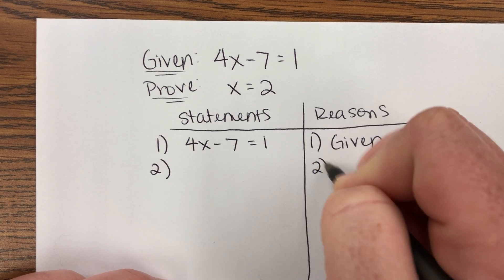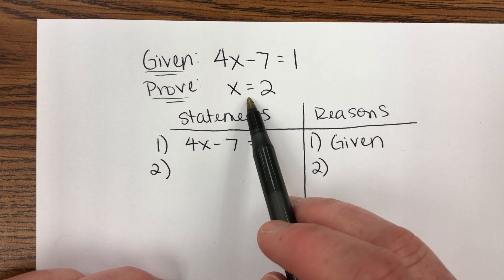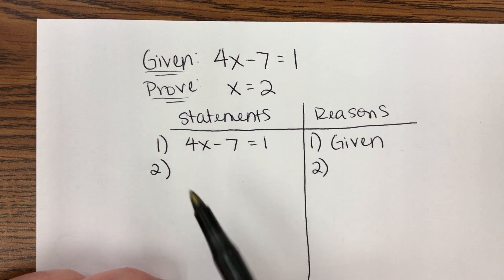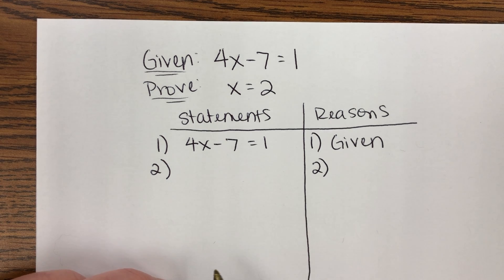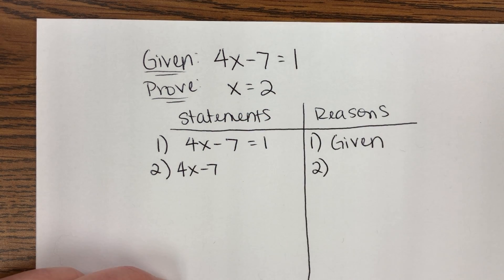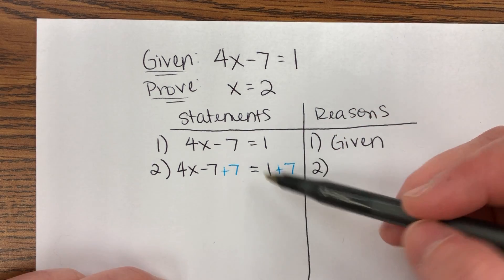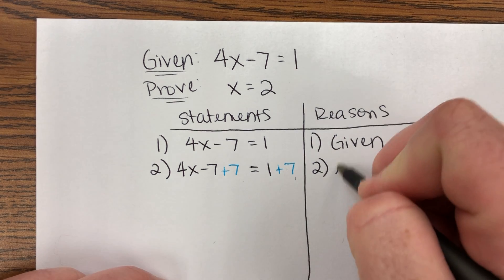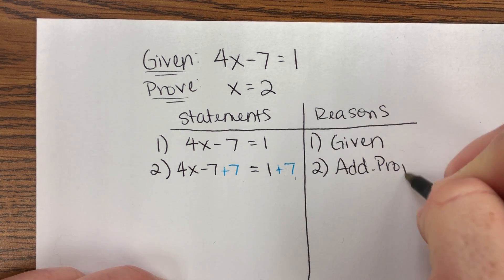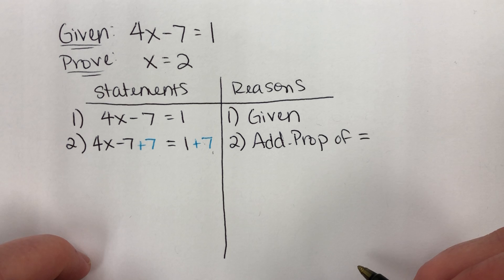So what's the first thing that I need to do in order to solve for x here? If my prove is that I have to prove that x equals 2, how do I start solving for x? First thing I want to do is get rid of minus 7. So I'm going to add 7 to my equation. So I'm going to put 4x minus 7 and I'm going to add 7. And whatever I do on one side of my equal sign, I know I always have to do the exact same thing on the other side to keep both sides equal. So why did I just add 7 to both sides? Because of the addition property of equality.